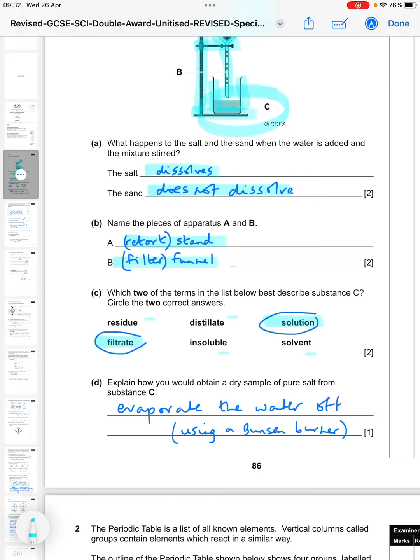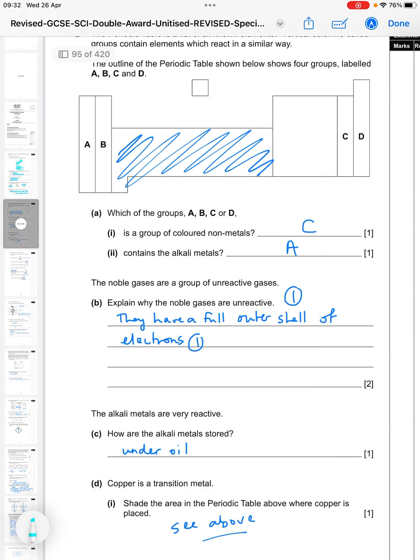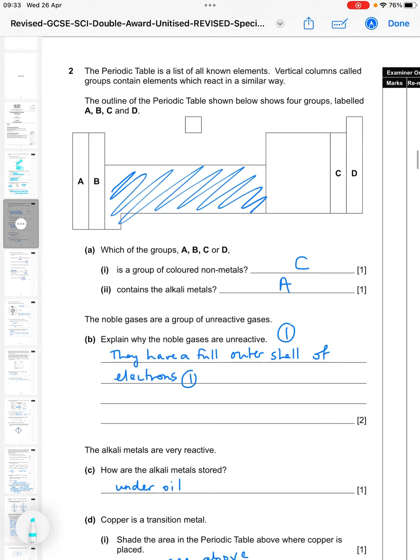Then D, explain how you would obtain a dry sample of pure salt from substance C. Well, you would simply evaporate the water off, and you could say you would do that using a Bunsen burner. Number two, the periodic table is a list of all known elements. Vertical columns, called groups, contain elements which may react in a similar way. An outline of the periodic table shown below shows four groups labeled A, B, C and D.